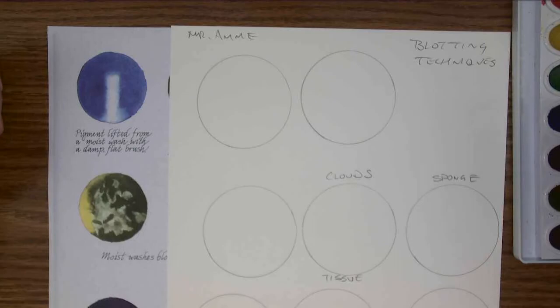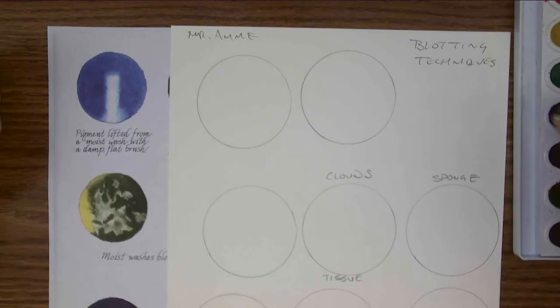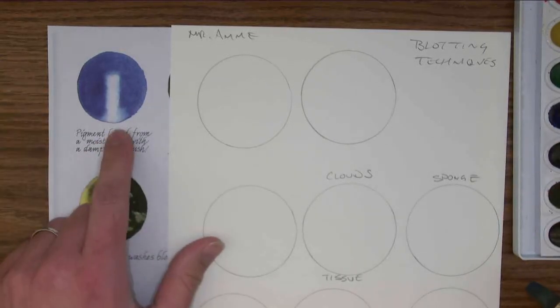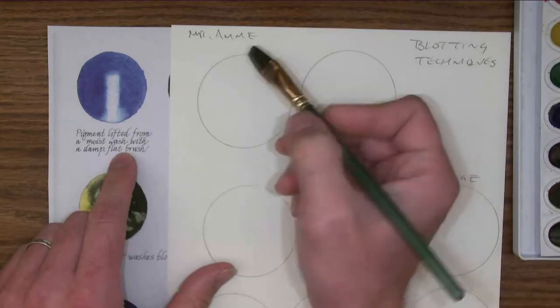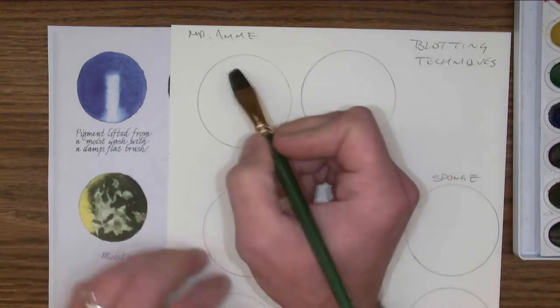Blotting techniques is all about texture and lifting. The first one here was pigment lifted from a moist wash with a damp flat brush. I'm just going to go on to the dry surface.